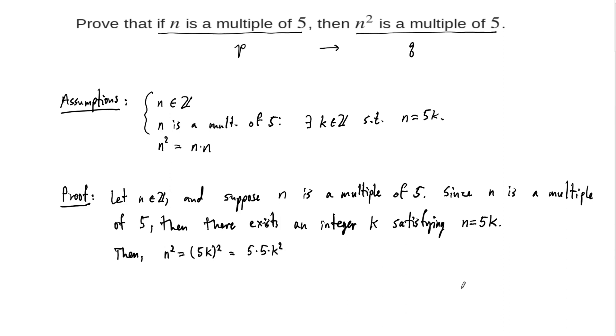Why am I writing it that way? Well, look at the conclusion that we want. We want to be able to show that n squared is a multiple of 5. So if I rewrite this just with some parentheses here, this is then written as 5 times 5 times k squared.